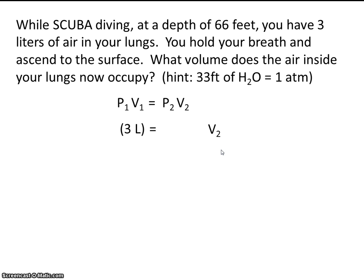So we'll have to either infer or do some calculations to get the pressures. So when you ascend to the surface, what should the pressure be at the surface? Well, you know that the pressure at the surface is about one atmosphere. That's standard pressure. So now the only thing we need is P1. Once we get P1, then we can solve for V2.